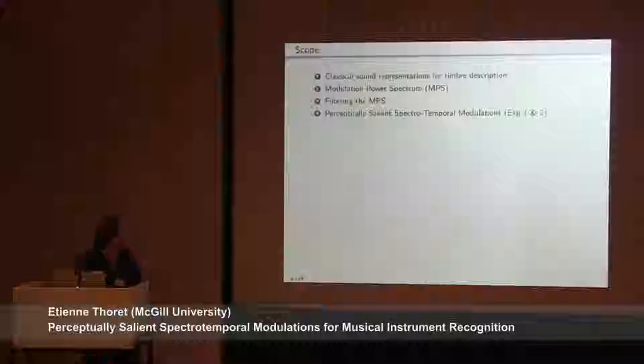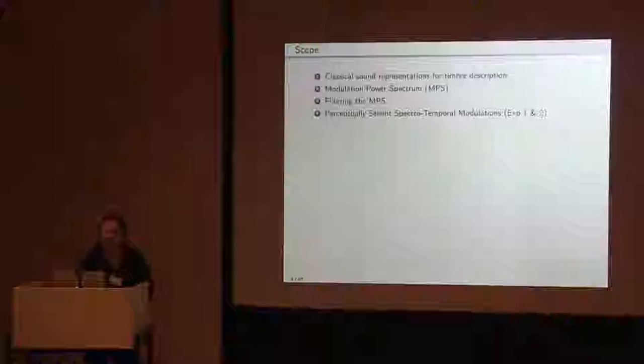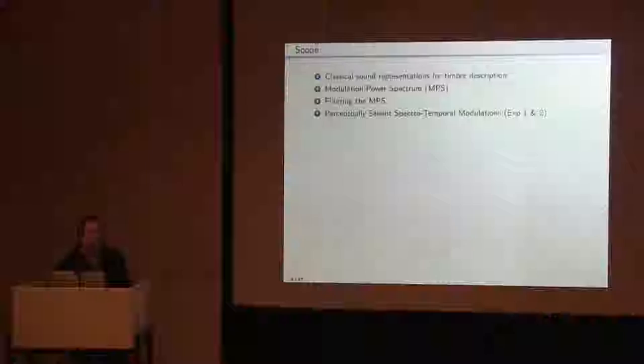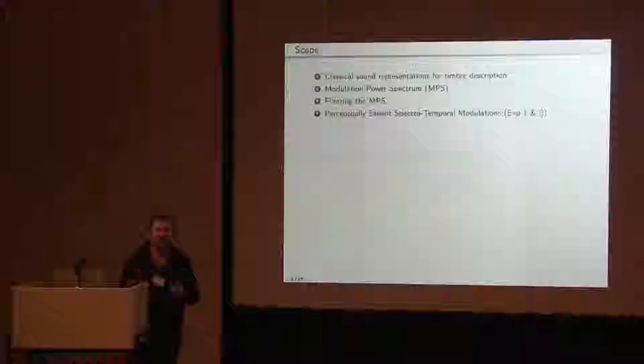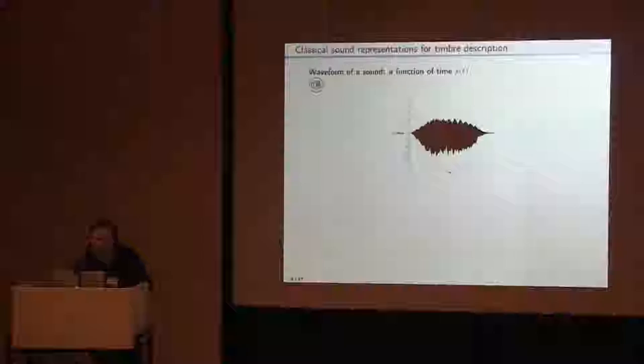This is about the modulation power spectrum, but I will first begin by summarizing classical sound representation — I'm sure you know, but it's always better to remember. After that, I will re-introduce the space-time modulation power spectrum, a little bit differently, and then how to filter this representation. Then I will present the results of a true experiment where we tried to understand which spectrotemporal modulations are relevant for the recognition of musical instruments. So I will first begin by classical sound representation.